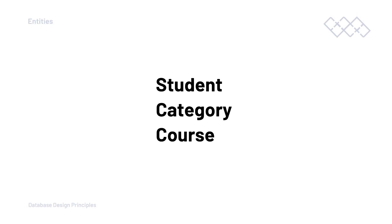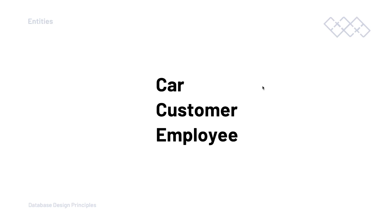Now let's imagine a scenario where we were building a database for a company who wanted to record information about their car wash business. So what significant entities might we generate? This is a car washing company — we want to record information about what cars have been washed, so potentially we need a car table. Maybe we have customers, so we may need to store information about the customers as well as their car. And this is a company, so we need to store information about employees as well — so we may have some sort of employee table.